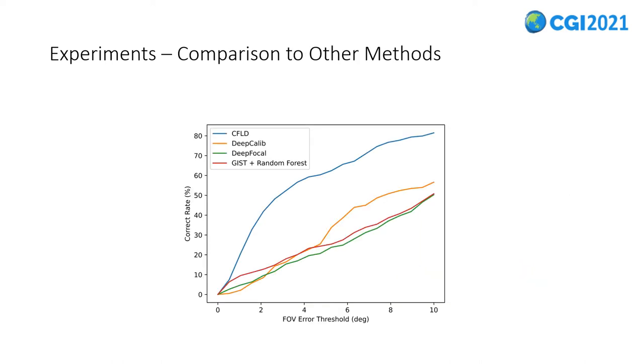We also compare the results of our approach versus several methods. The first method is GIST plus Random Forest, which uses GIST, a global descriptive feature commonly used for scene recognition, to train a collection of 10 regression trees on the training set of DeepFocal. DeepFocal is the second baseline method, which uses a basic AlexNet regression model to fit the horizontal field of view. The third one is a deep learning-based method, DeepCalib, which is an open-source work estimating focal length and distortion. Our method outperforms all methods on the images we collected.